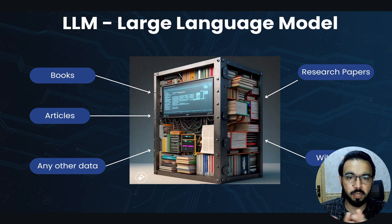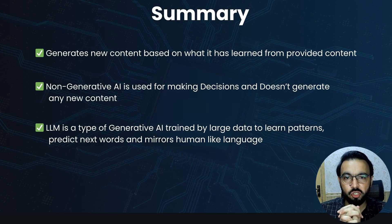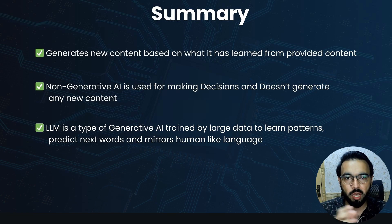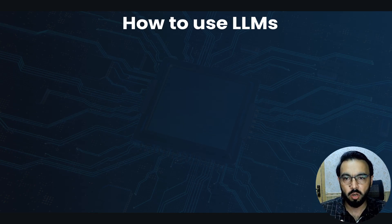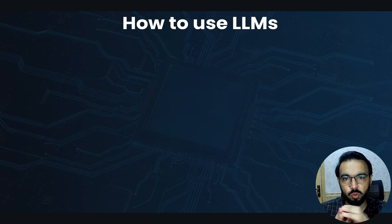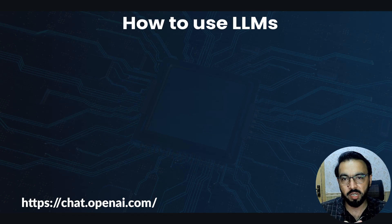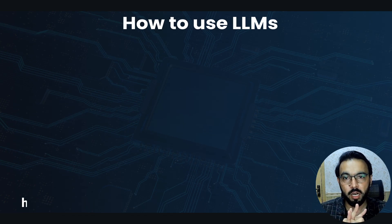The training data includes books, articles, research papers, Wikipedia, and any other public data fed into the large language model. From OpenAI we have GPT, from Google we have Gemini, and from Meta we have Llama. These companies have trained all these models and provided ways to use them — either through chat.openai.com, meta.ai, or Google AI Studio.